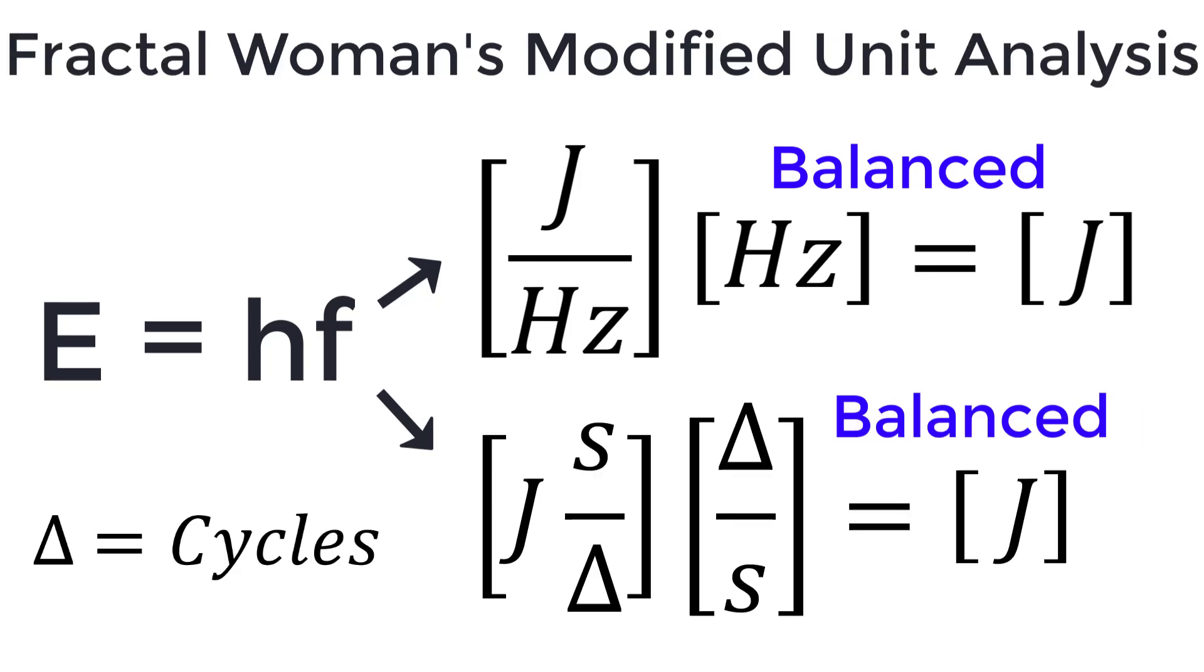In Fractal Woman's modified unit analysis, the unit of cycles is accounted for using the delta or triangle symbol instead of ignored using the number one. Thus, Planck's constant has units of joule times second divided by cycles, and the energy equation is balanced.